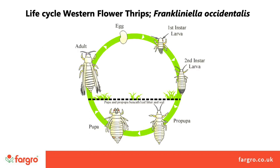Before moving on to the main pests, I think it's worth just having a look at thrips, leaf miner and gall midges. Although not regarded as soil-borne pests, we can see from this life cycle of the western flower thrips that some do indeed have at least part of their life cycle in the compost or soil. This means that some of the products we've been using, such as pesticides or biocontrols, would have been giving us at least some control.